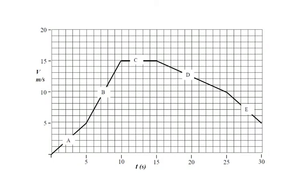Today I want to talk about velocity-time graphs and how they can be useful to find out two bits of information: they can tell you the distance traveled and the acceleration. Looking at the left-hand side, velocity is on the y-axis — in this case the maximum goes up to 15 meters per second, so it could be a car or any vehicle. Time is along the x-axis in seconds.